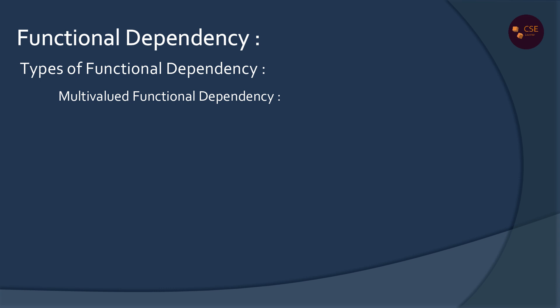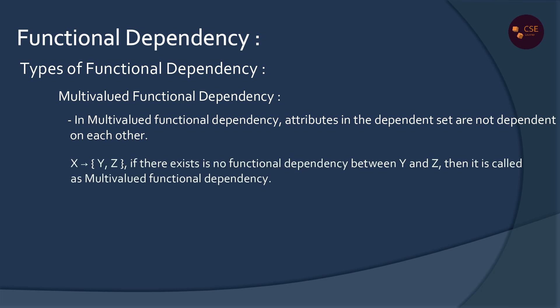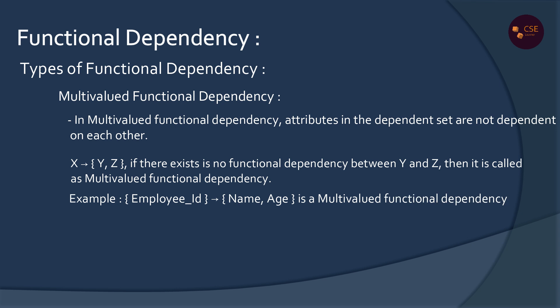Multi-Value Functional Dependency means one determinant determines multiple dependent attributes. That is, X determines Y and Z, meaning X determines Y and X determines Z. For example, Employee ID determines Name and Age — Employee ID determines Name and Age. This is Multi-Value Functional Dependency.